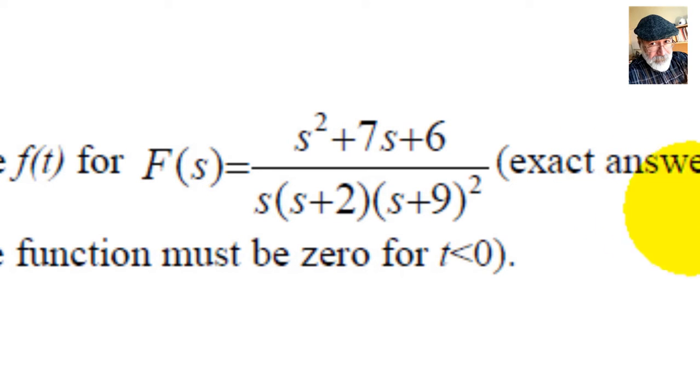As with the homework assignment, the function must be 0 for t less than 0, which means, of course, that you multiply the final answer by the Heaviside step u(t). The first thing I'm going to do,